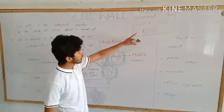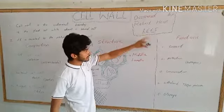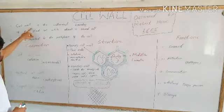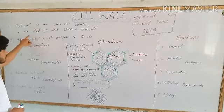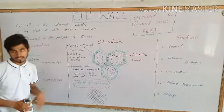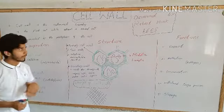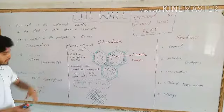The cell wall was discovered in 1665. The cell wall is the outermost boundary of the plant cell while absent in animal cells. It is secreted by the protoplasm of the cell.